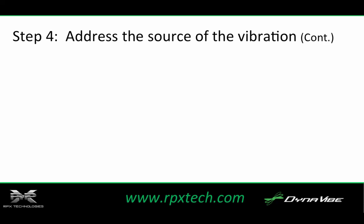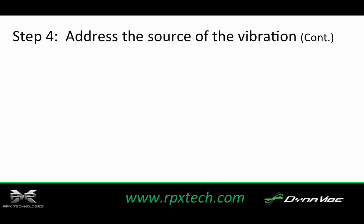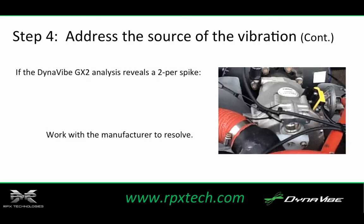If the velocity mode graph shows a 1.2-per spike, balance the carbs per Rotax maintenance guidelines to resolve the vibration. If the left and right carbs are not balanced, one could be giving more gas to its half of the engine than the other carb, causing a vibration. Other things to check that can cause a 1.2-per vibration are fouled spark plugs, sticky valves, or possible issues with the ignition system. A 2-per spike on the velocity mode graph for this engine indicates a gearbox issue.